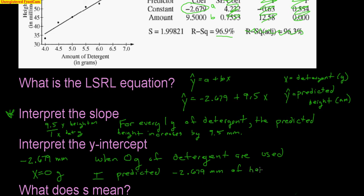So when 0 grams of detergent are used, I predict, and again, anytime you use this equation, you've got to have that word predicted there. I predict negative 2.679 millimeters of height. Now, once again, you can't have negatives. Sometimes the y-intercept doesn't make sense. Don't worry about it too much. If you're asked to interpret it, still do it. But sometimes it doesn't seem to make sense, because you can't really have negative height. And that's okay.